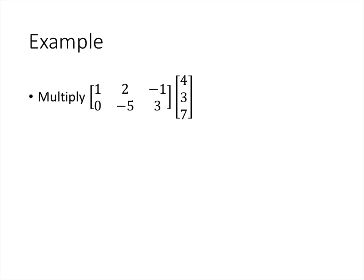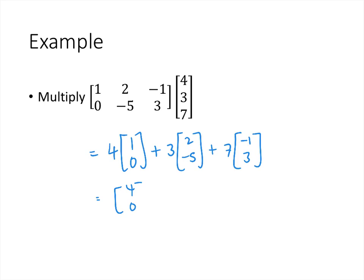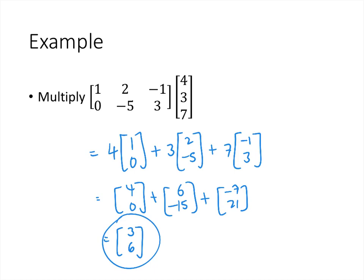To do a quick example: here we have matrix A with three columns, multiplied by a vector with three entries. By the definition, that's the first entry of the vector times the first column of the matrix, plus the second entry times the second column, plus the third entry times the third column. So that's (4, 0) plus (6, -15) plus (-7, 21). Adding component-wise: 4 + 6 - 7 = 3, and 0 - 15 + 21 = 6. So the result is (3, 6).